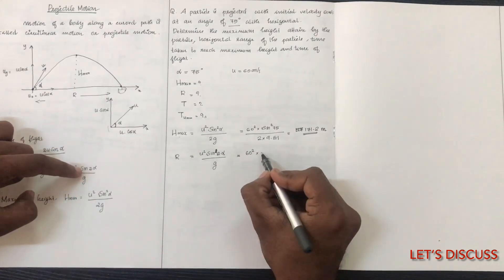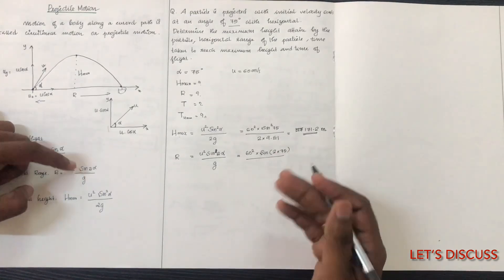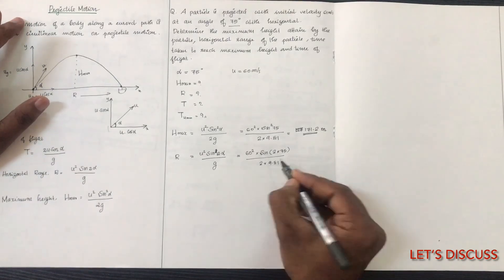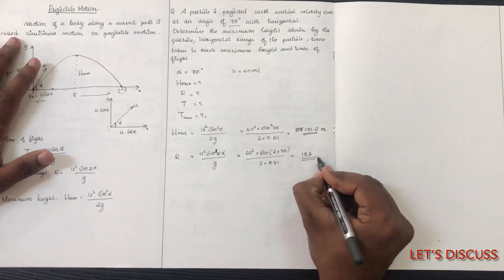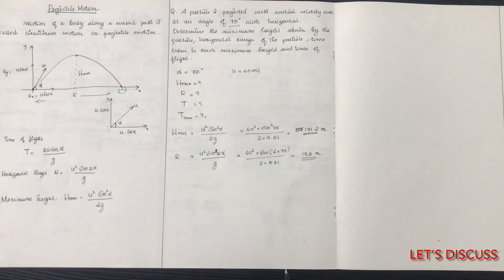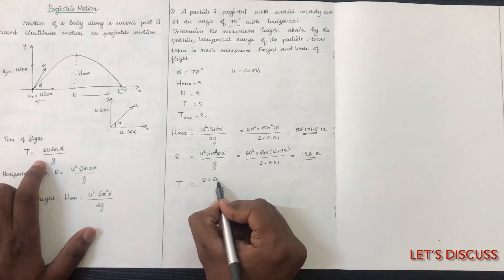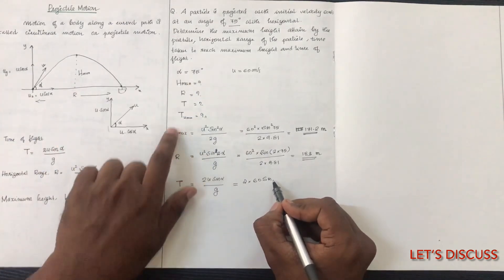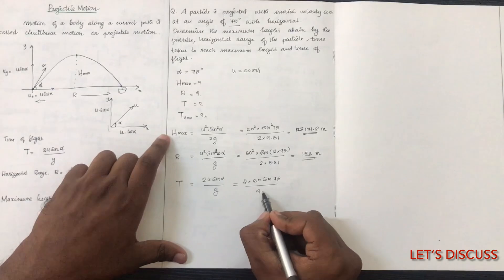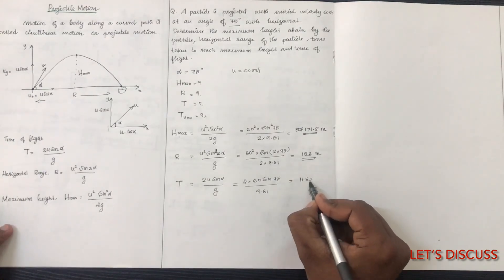For the range R, we use R equals u squared sine 2 alpha divided by g, which is u squared sine of 2 times 75 degrees divided by 9.81. Computing this gives approximately 183 meters. The time to reach maximum height using u sine alpha divided by g gives approximately 5.91 seconds.